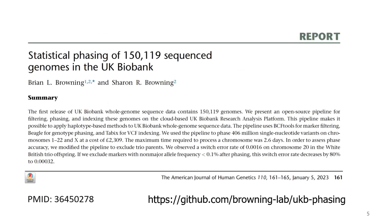We recently published a paper in the January issue of the American Journal of Human Genetics describing a phasing pipeline for the first release of UK Biobank sequence data — 150,000 individuals. After that work, the UK Biobank released an expanded set with 200,000 individuals. Most of this talk relates to the 200,000-individual dataset. We used the same pipeline, essentially just changing the path names for input files and re-ran it. The PubMed identifier is shown on the bottom left, and the pipeline GitHub repository is on the bottom right.